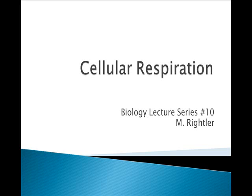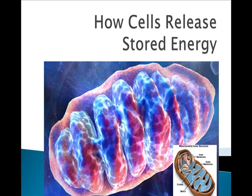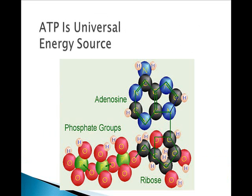Today we're going to cover cellular respiration — this is basically how cells release stored energy. This can be energy that they got from their own photosynthetic processes, or it can be energy they obtained through nutrition, in other words eating something because they're a heterotroph. The energy is primarily chemical in nature and is often in the form of glucose, then it gets converted into the universal energy source or currency called ATP.